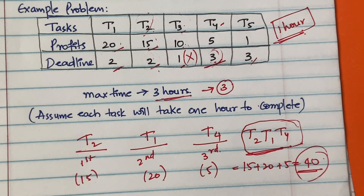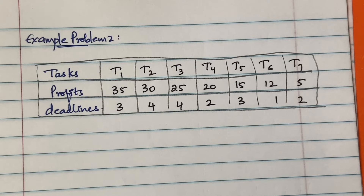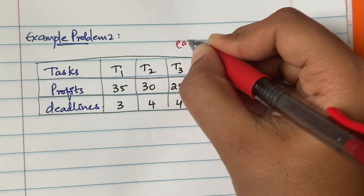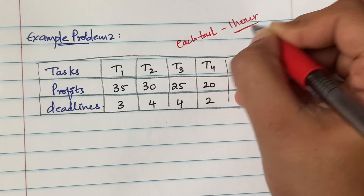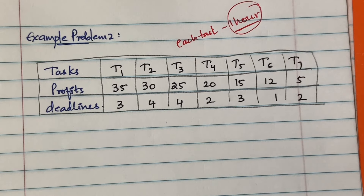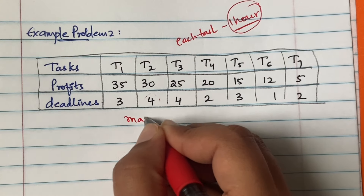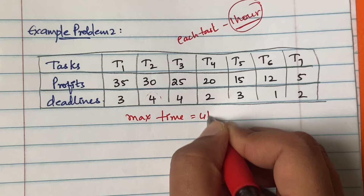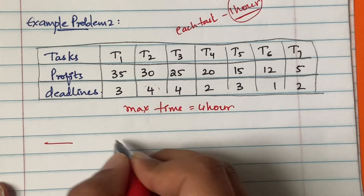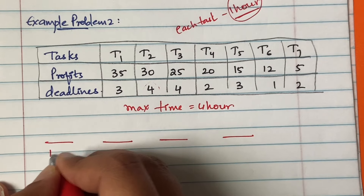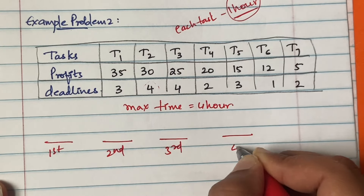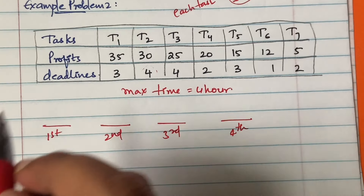Let's do another example for better understanding. Again, each task takes one hour to complete. The maximum deadline here is four hours, so we have four time slots: first hour, second hour, third hour, and fourth hour.